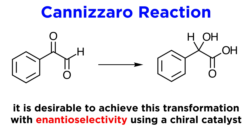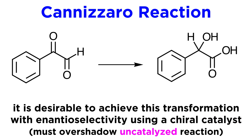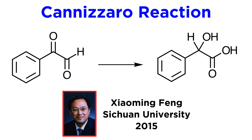Chemists have been at work to make this reaction enantioselective. To do this, one needs some kind of chiral template to guide the reaction, ideally a catalyst, so as to use only a tiny amount. This catalyst must be very effective to overshadow the uncatalyzed reaction, which would lead to a racemate. To illustrate this transformation, we will highlight a study by Xiaoming Feng from Sichuan University in China, published in 2015.